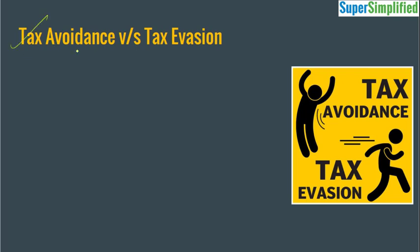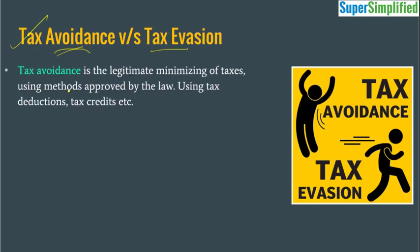Let's understand what is the difference between tax avoidance and tax evasion. These terms are basically used interchangeably most of the times, but they are very different concepts. Tax avoidance is the legitimate minimizing of taxes by using the methods which are prescribed in the law, which are approved by the law. For example, if you talk about income tax, there are a lot of provisions in the income tax act itself that you can do some kind of saving so that you can reduce the amount of tax liability.